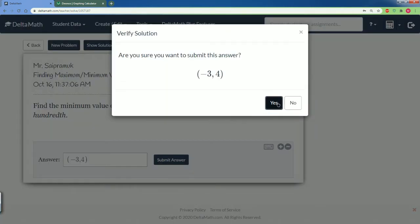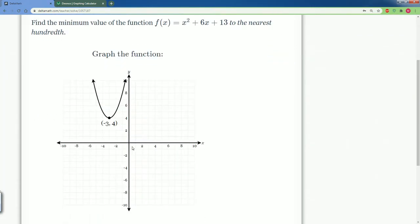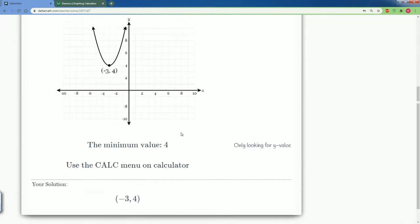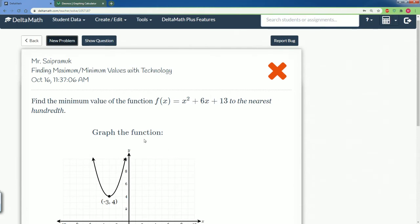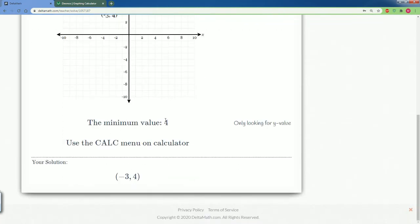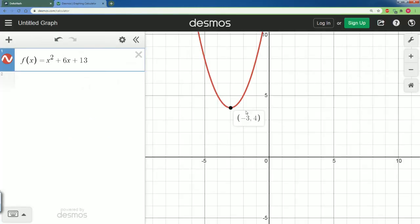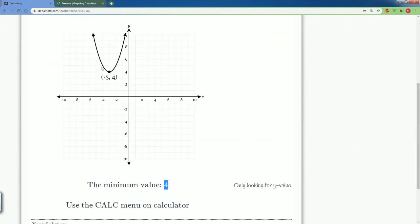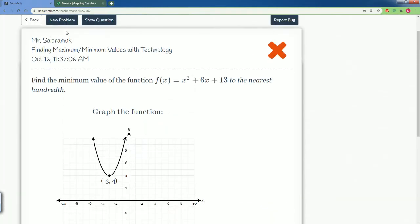And I hit submit. Nope, that's the wrong answer. Oh, so apparently they don't want the point, they just want the range. What they're looking for is just the y value of 4. So the smallest value here is, you can say that when x is negative 3, y equals 4, so the minimum value here is 4. All right, so let's do that again. This is how we learn.